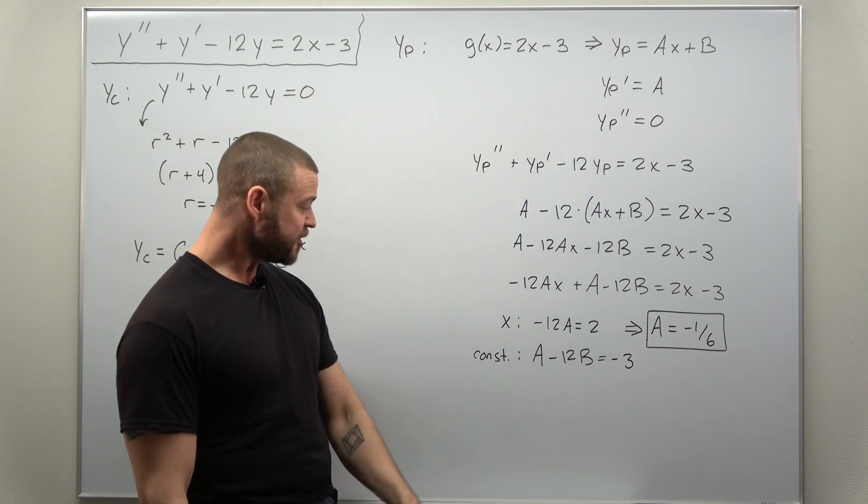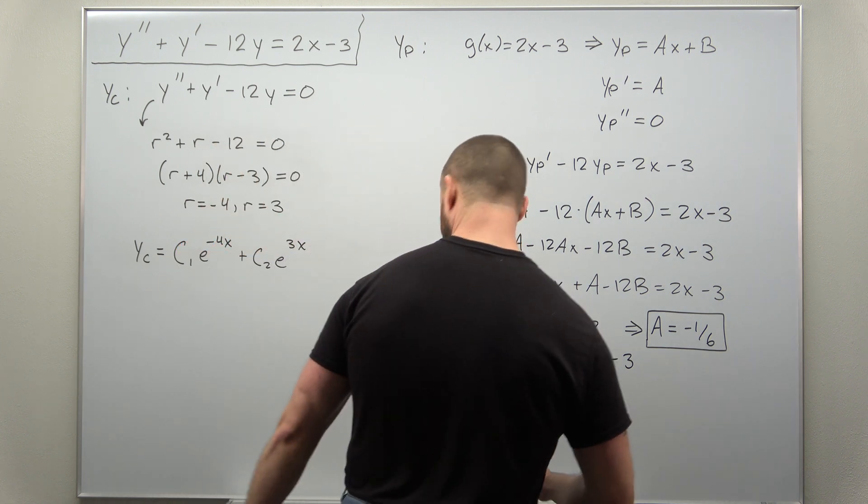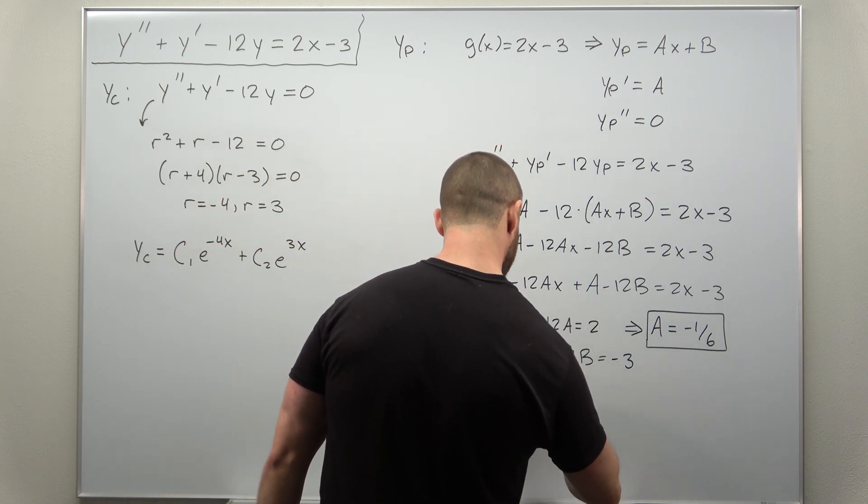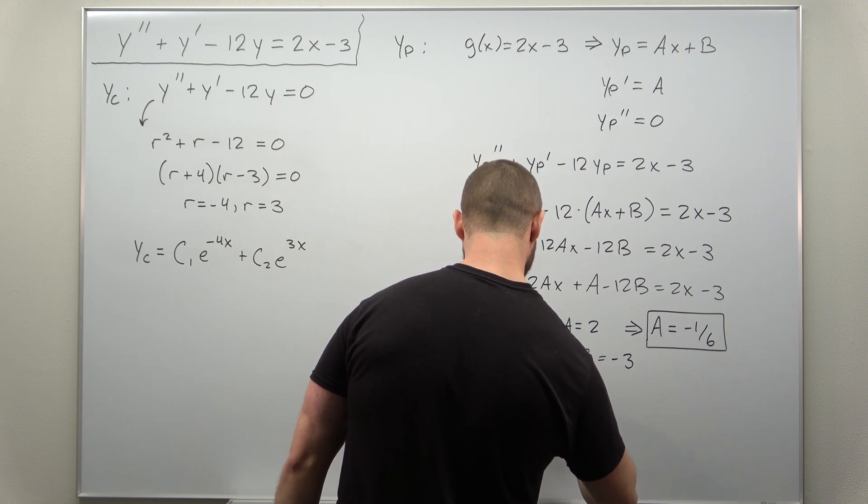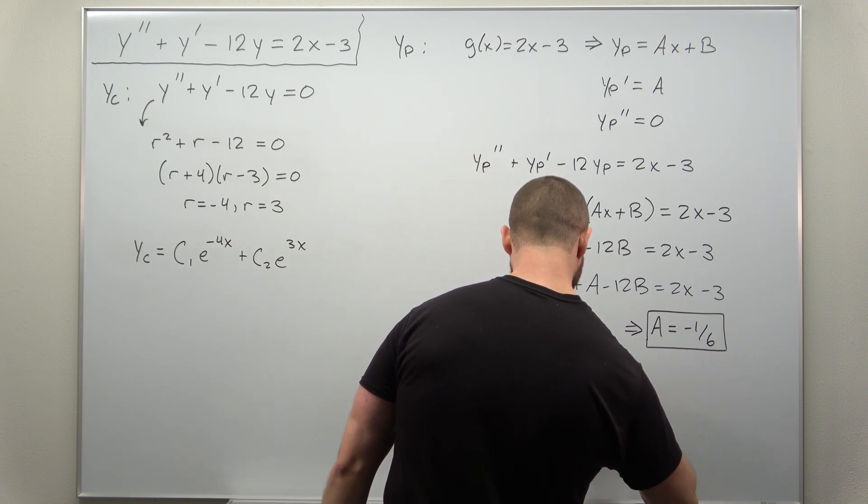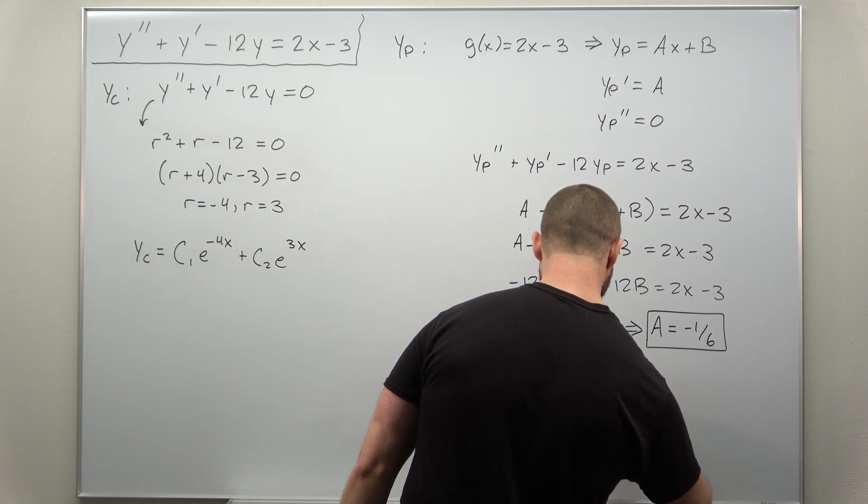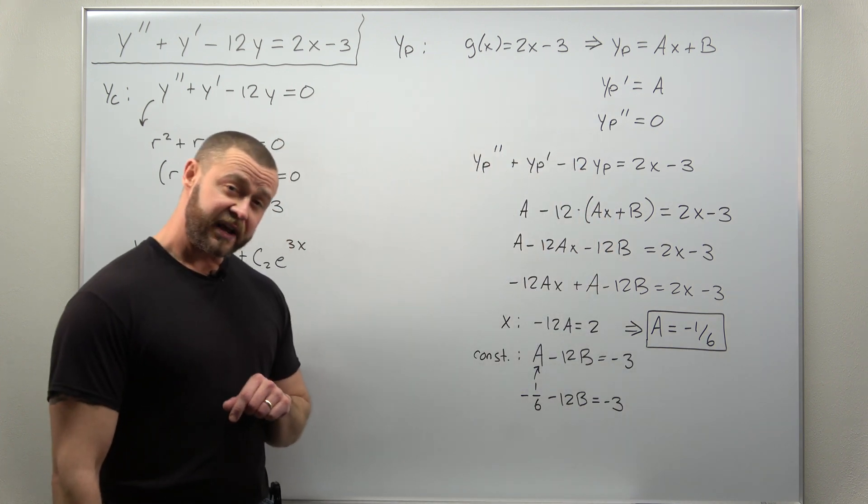We can plug in the value for a. So we have that as negative one over six minus 12b equals negative three.